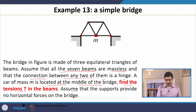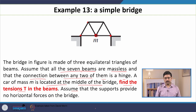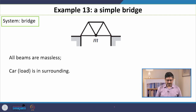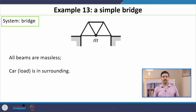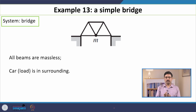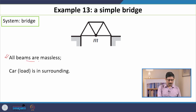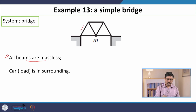It is also given that the supports at the ends — the joints that support the bridge on two sides — have no horizontal forces, so this is like a roller-type support. The first thing to note is that you should start by choosing your system. In this example, we are going to choose the entire bridge as our system. If the structure is very lengthy or complicated, you can also choose a section of the framework as your system. Two important clues given in the problem: all beams are massless, which means the tension is uniform along the beams.